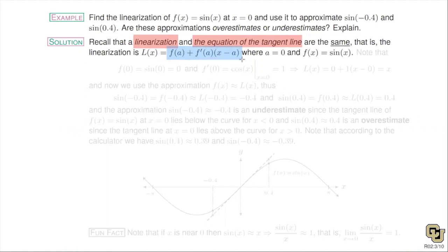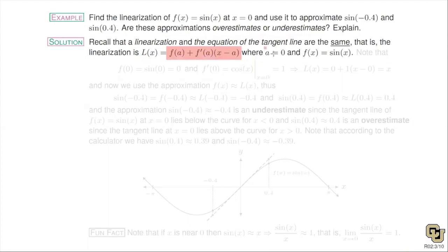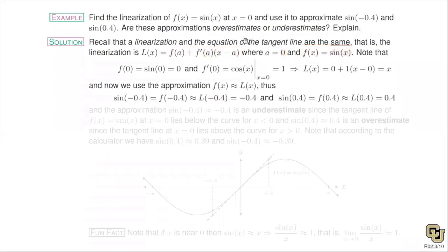The formula is f(a) plus f prime of a times (x minus a). We use this tangent line equation to approximate the function. Here a is zero and the function is sin(x), so I find the derivative of sine evaluated at zero and evaluate sine at zero. Make sure you know your unit circle — if someone says sine of zero equals one, that's wrong. The errors tend to happen not in the calculus but in the basic trig.